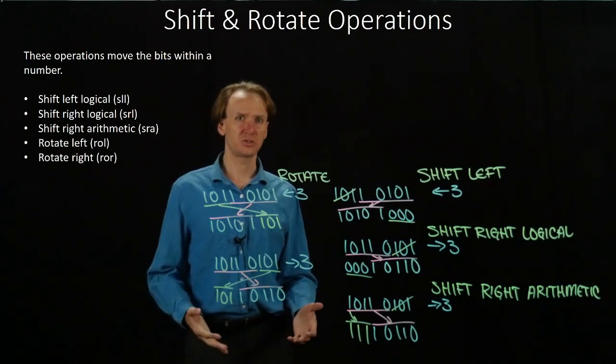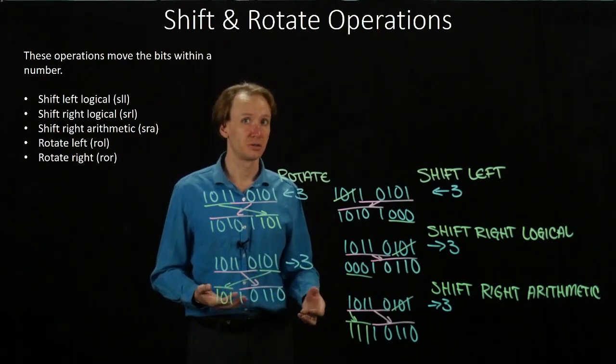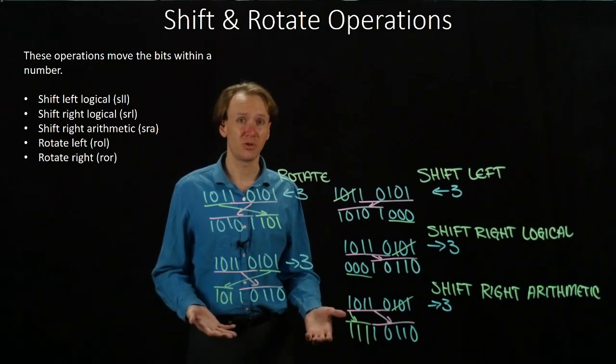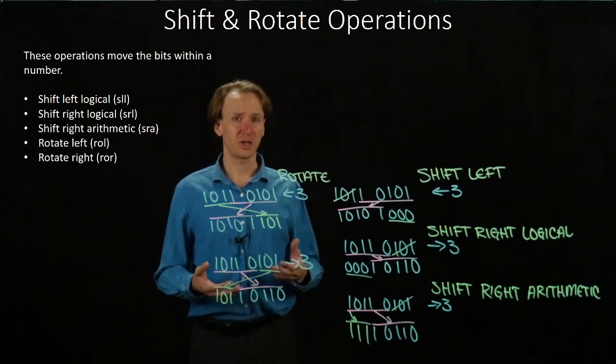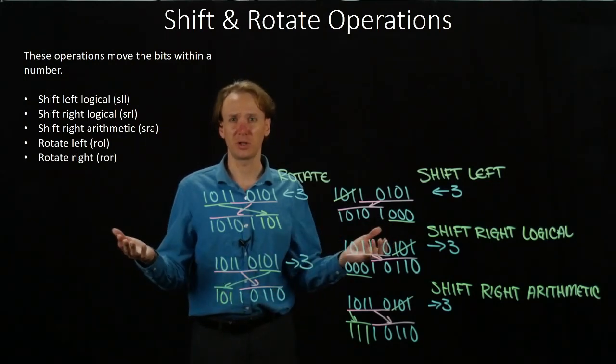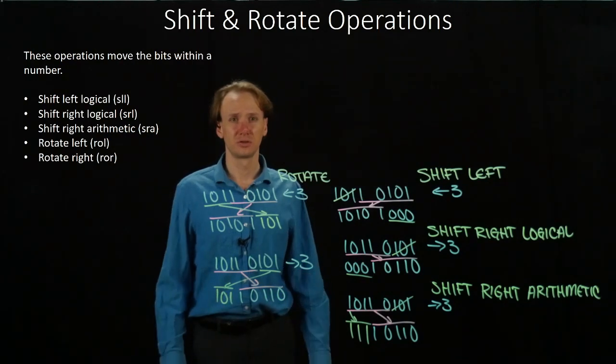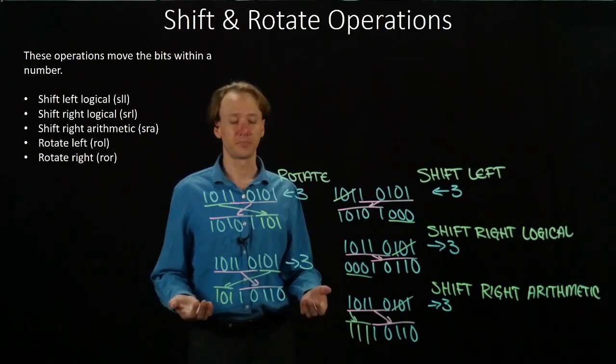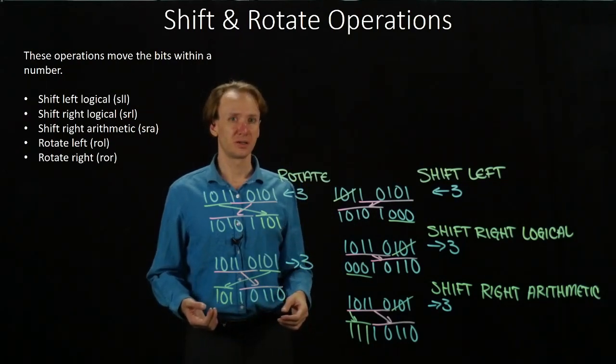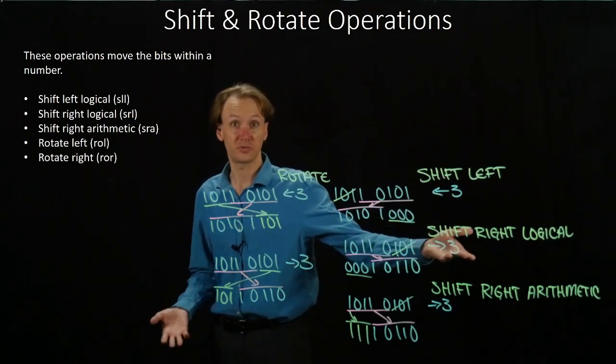The MIPS architecture allows you to shift your bits up to 31 places left or right. This is a 32-bit architecture, so all of our numbers are 32 bits long. So shifting up to 31 places works just fine, because anything more and you just completely throw away your number. You might as well just stick all zeros in. You could just as easily stick zeros in for a shift left logical or a shift right logical.